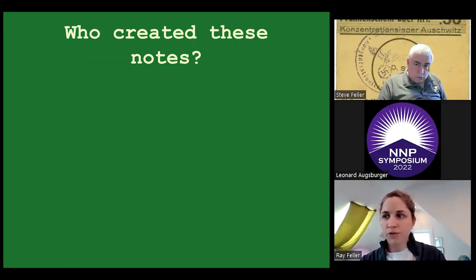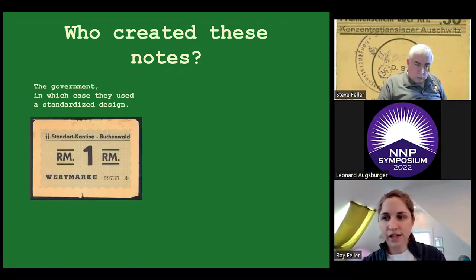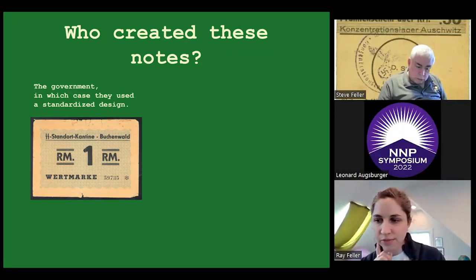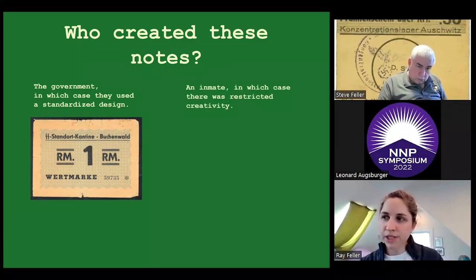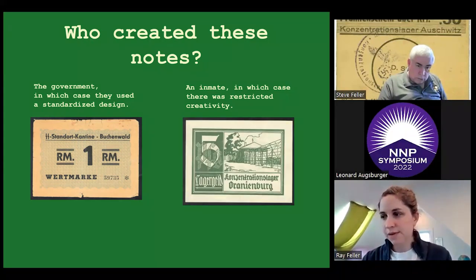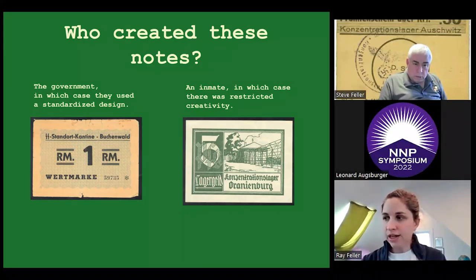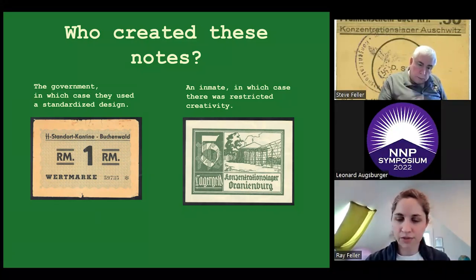Behind the notes, there were different people involved. Some were done in a standardized design — you can see the name of the camp and the denomination. This one is from Boop and Vault. They're not on extremely high quality paper, but they have a sort of standard professional-looking design. Others were sometimes designed by inmates. In some ghettos and camps, there were graphic design departments. Here's an example from that first camp, Oranienburg — a note designed by an inmate who was a political prisoner named Horst Willy Lippert. You can see the barbed wire fence and a guard under the tree. It also says 'Lagergeld,' meaning camp money, not money for other purposes.